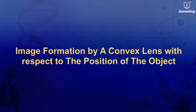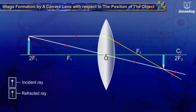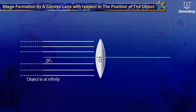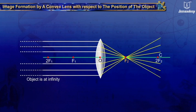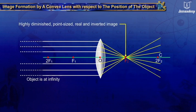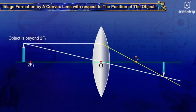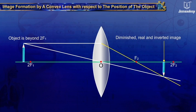Image formation by a convex lens: The position, size, and nature of the image formed can be studied with ray diagrams. When the object is at infinity, the image is formed at focus F2 — highly diminished, point-sized, real, and inverted. When the object is between 2F1 and F2, the image is diminished, real, and inverted.